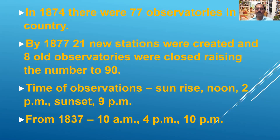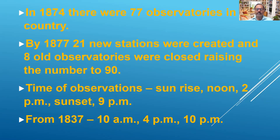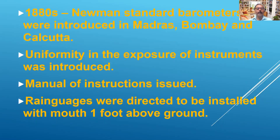Around that time, one observatory was opened in the Gulf area, one in Baluchistan, and one later in Rangoon — so the combined British India network was expanding. The times of observations at these observatories were at sunrise, noon, 2 PM, sunset, and 9 PM local time, which differed place to place. From 1837 they standardized it to three observations: 10 AM, 4 PM, and 10 PM.